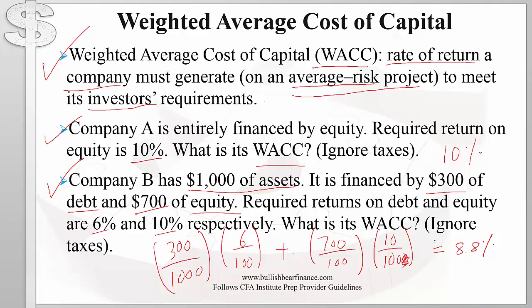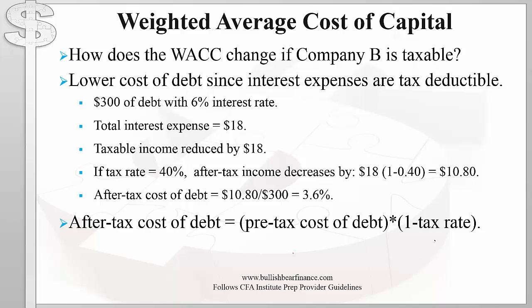The weight for each investor is simply their capital provided divided by total capital of the company. So far we have been ignoring taxes in our analysis. What happens if we introduce taxes? How does the WACC change if Company B were taxable? Taxes reduce the cost of debt because interest expenses are tax deductible.